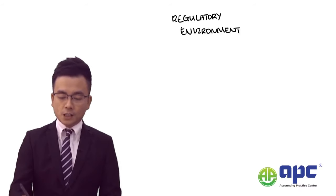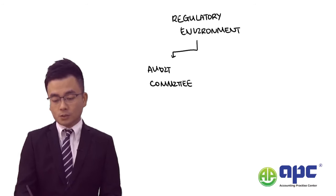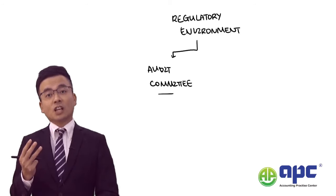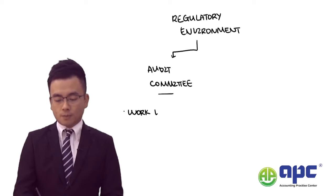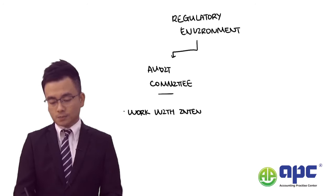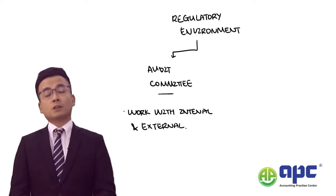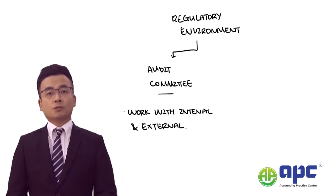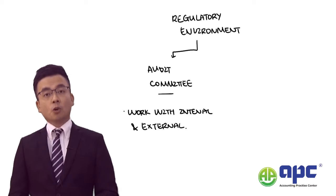From a syllabus point of view, you will need to understand the audit committee. The composition requirement would be at least three non-executive directors, and at least one of them would be the financial expert. More importantly, the audit committee will work with both the internal and external auditors. So if the internal auditors find any problems regarding the internal control system, they will need to report to those charged with governance — which means the audit committee. From the external auditor's point of view, if we decide to qualify our audit opinion, we need to communicate this with the audit committee first, before we qualify.